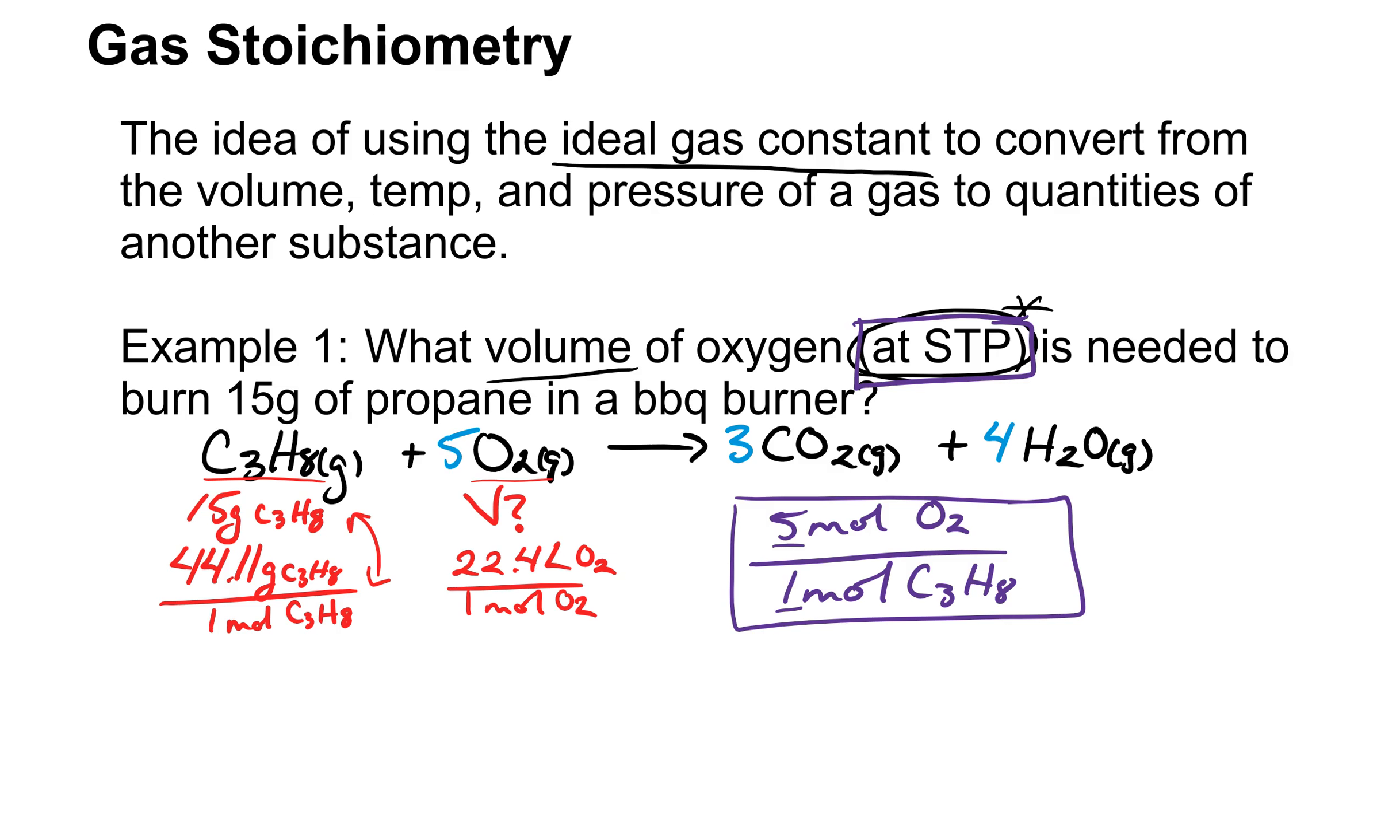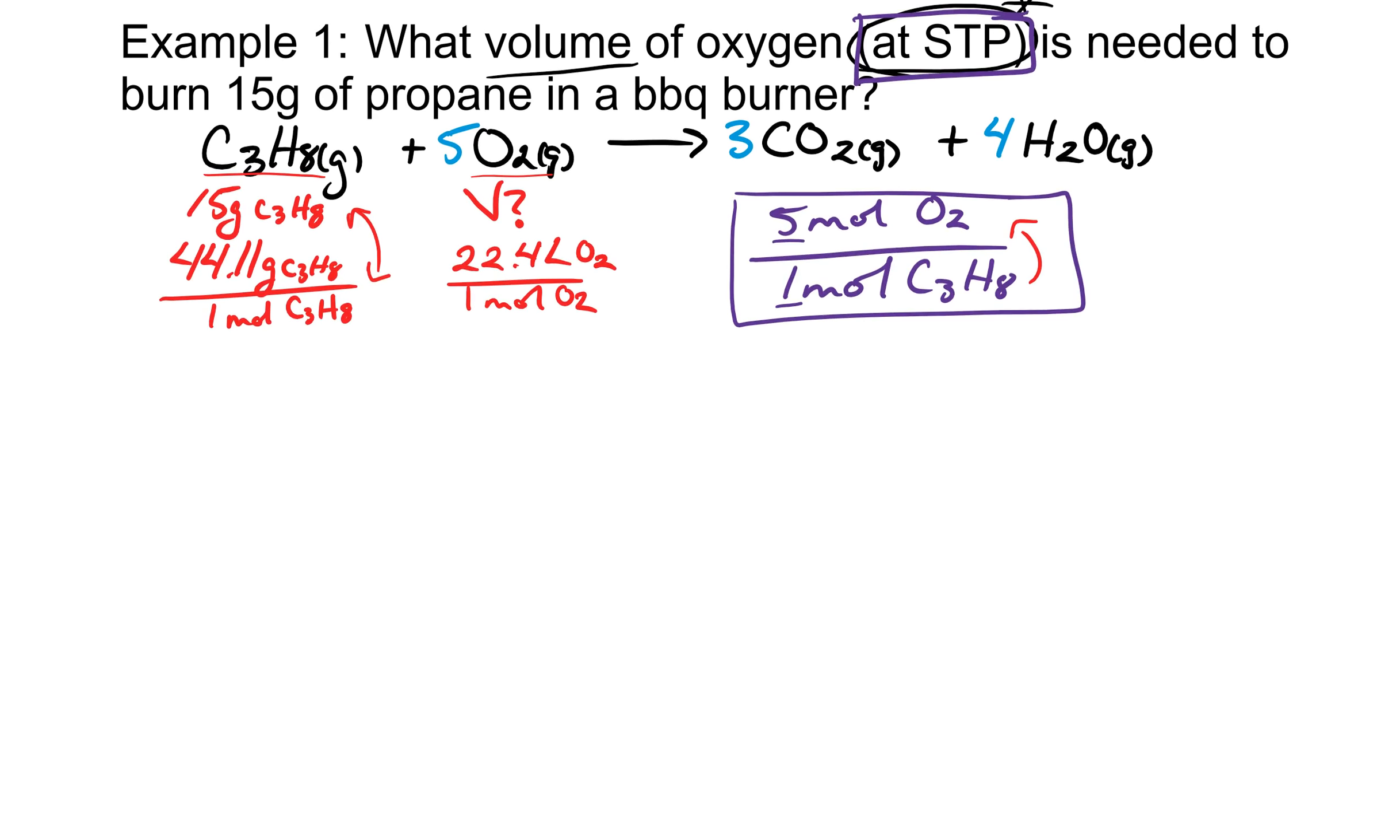Nice. So now we can convert from grams of propane to moles of propane, then from moles of propane to moles of oxygen, then from moles of oxygen to volume of oxygen. We have everything that we need to finish this problem. Let's write it out. In stoichiometry, what we do, at least in my class, is we always start with what we want. What do we want? We want the volume of oxygen.